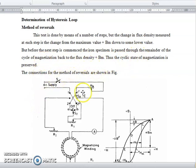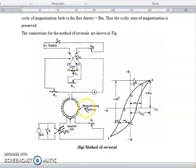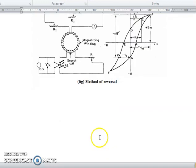The connections for the method of reversals are shown: magnetizing winding, search coil and DC supply. And here it will consist of galvanometer. And this is the hysteresis loop for the reversal method.